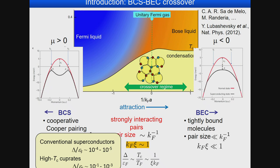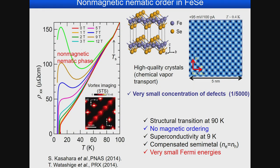In some underdoped high-T_C cuprates, this ratio becomes larger — around 10⁻¹ to 10⁻³ — and there is strong discussion about the relevance of BCS-BEC crossover in the physics of underdoped high-T_C cuprates. But today I focus on iron selenide in the context of BCS-BEC crossover.